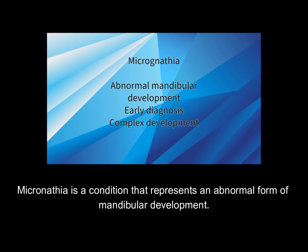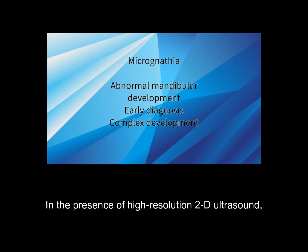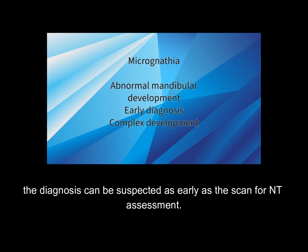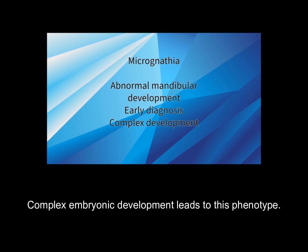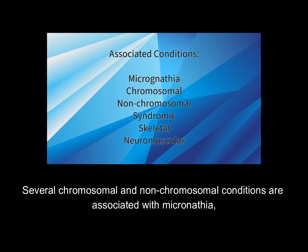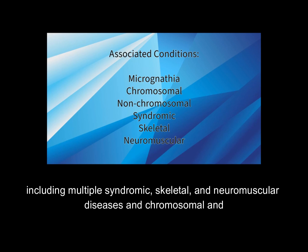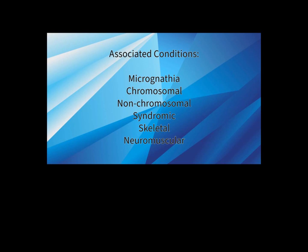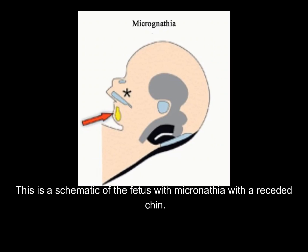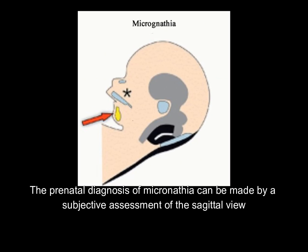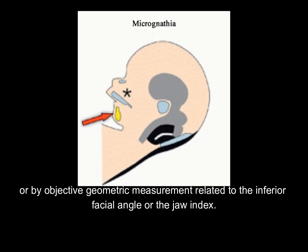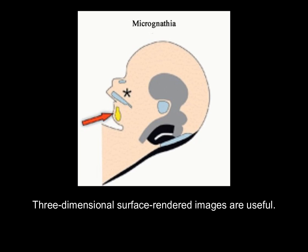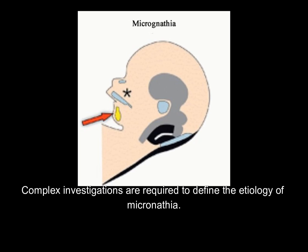Micrognathia is a condition representing an abnormal form of mandibular development. In the presence of high-resolution 2D ultrasound, the diagnosis can be suspected as early as the scan for NT assessment. Complex embryonic development leads to this phenotype. Several chromosomal and non-chromosomal conditions are associated with micrognathia, including multiple syndromic, skeletal, and neuromuscular diseases, as well as chromosomal and other non-chromosomal syndromic disorders. Many of these conditions can be diagnosed prenatally. The prenatal diagnosis of micrognathia can be made by subjective assessment of the sagittal view or by objective geometric measurement related to the inferior facial angle or the jaw index. Three-dimensional surface-rendered images are useful.